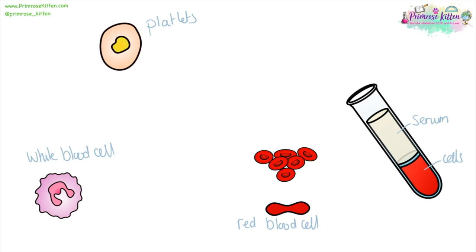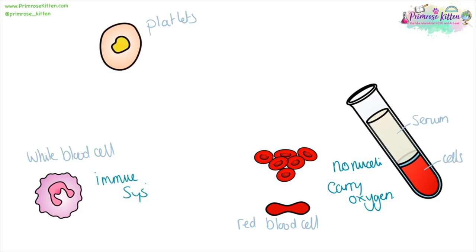Blood is made up of several components. The actual colour of blood is a pale yellow — this is the serum, the liquid component of the blood. The cells give it its actual red colour. Red blood cells, which give blood its colour, have no nuclei, and this is so they have more space to carry oxygen, which is their main function. White blood cells are part of the immune system. And platelets are fragments of cells, and they are important for things like clotting.